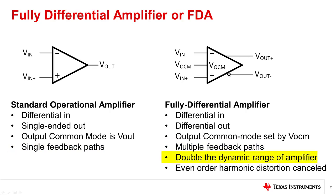Since the FDA has two outputs, the dynamic range is twice as wide as an amplifier with the same power supplies. Finally, the FDA has the benefit of canceling most even order harmonics, and thereby reducing distortion. Because many data converters have fully differential inputs, FDAs are a natural choice as an input driver.